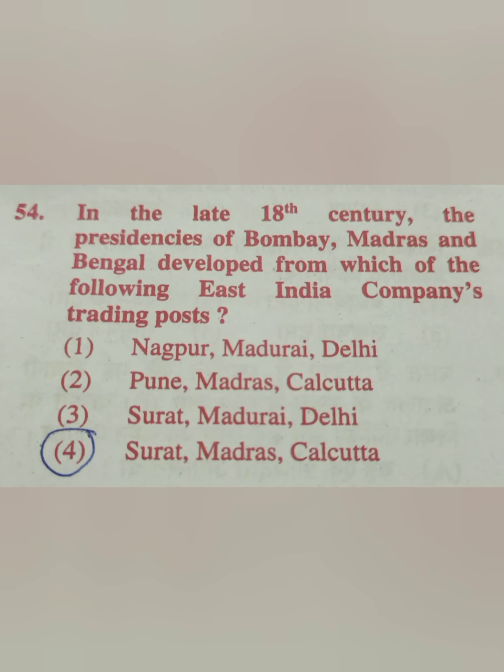Question 54: In the late 18th century, the presidencies of Bombay, Madras and Bengal developed from which of the following East India Company's trading posts? The correct answer is option 4 — Surat, Madras and Calcutta.